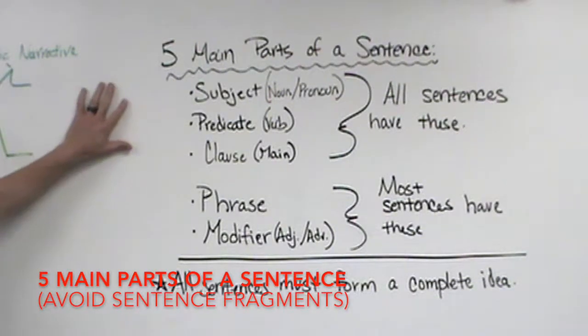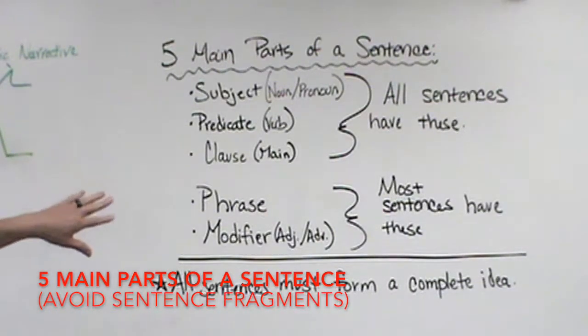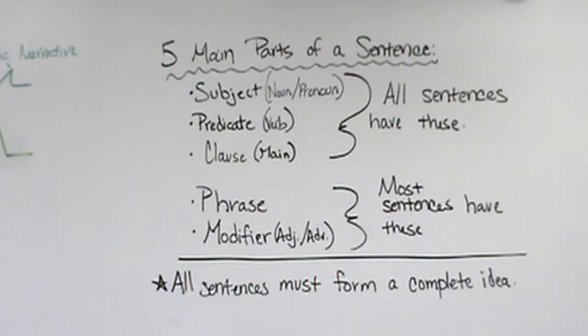So, five main parts of a sentence. We covered these yesterday. We said that every sentence has to have what? Subject. Subject, predicate or verb, and what? It has to be a complete idea. Correct.